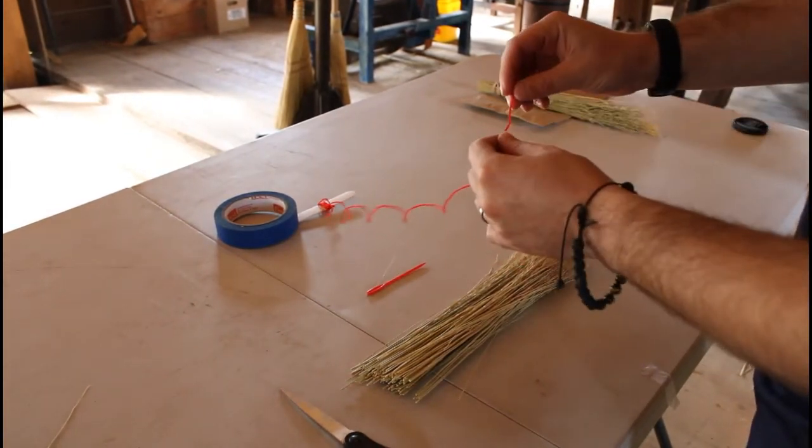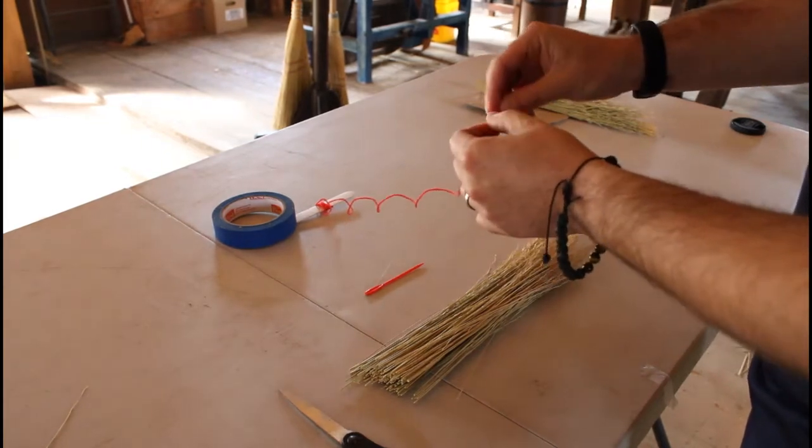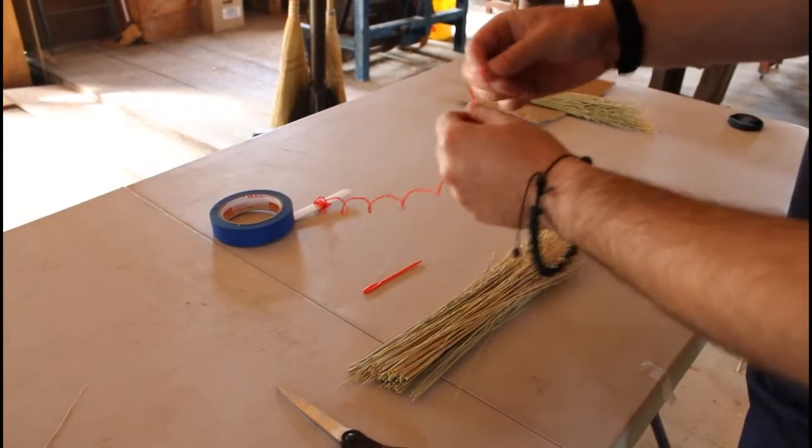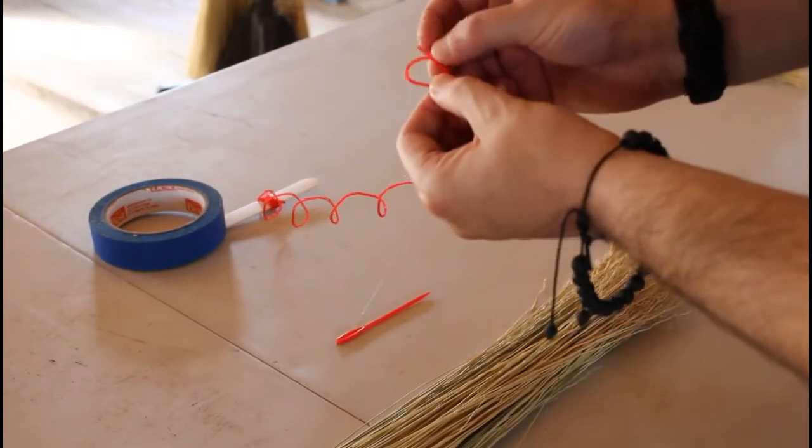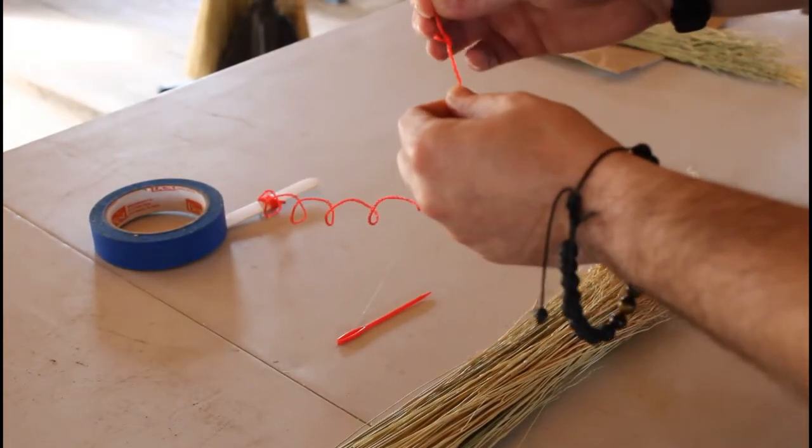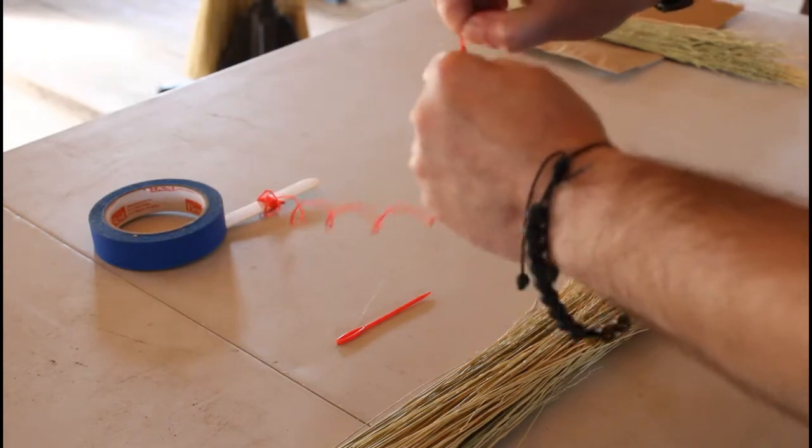The next step is we're going to tie just a simple overhand knot around the end of the loop. So you just make a loop just like that and then you're just going to stick the end right through it and then pull it nice and tight. It should be enough just like that.